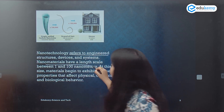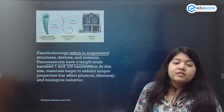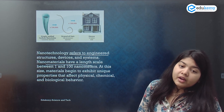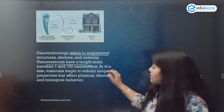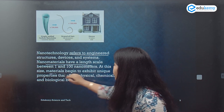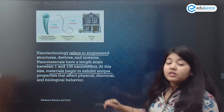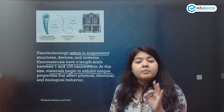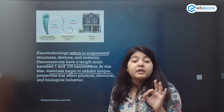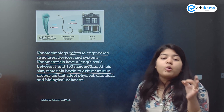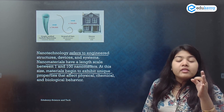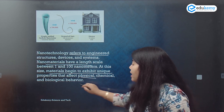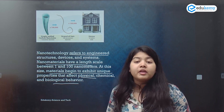Nanomaterials have a length scale between 1 and 100 nanometers. At this size — and this is important — materials begin to exhibit unique properties that affect their physical, chemical and biological behavior.